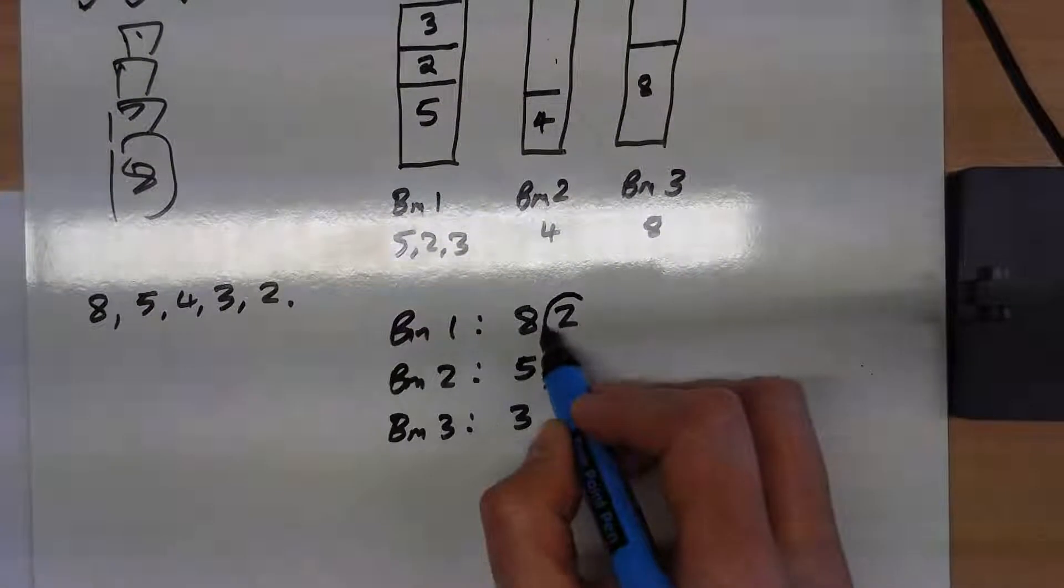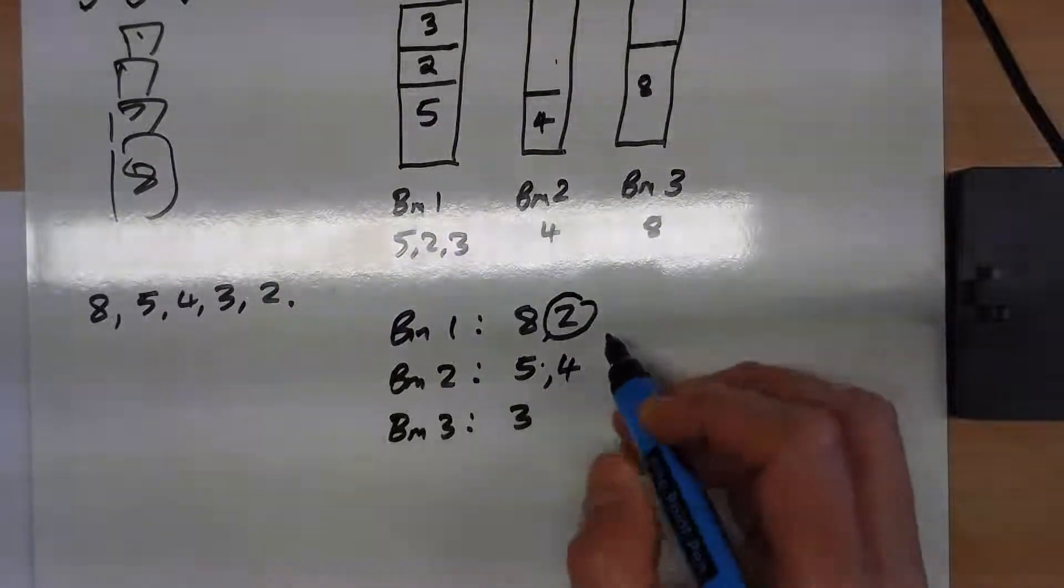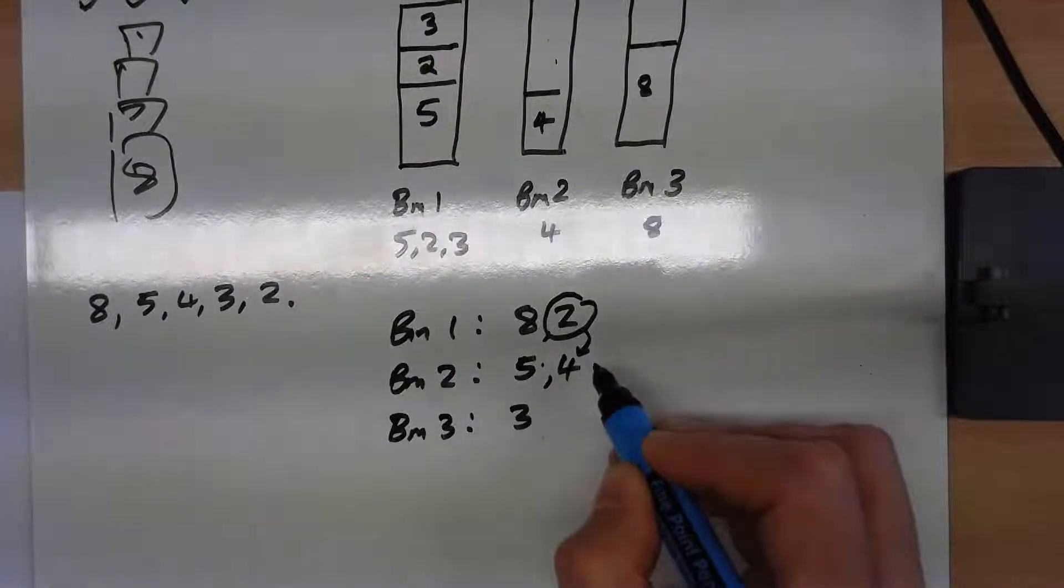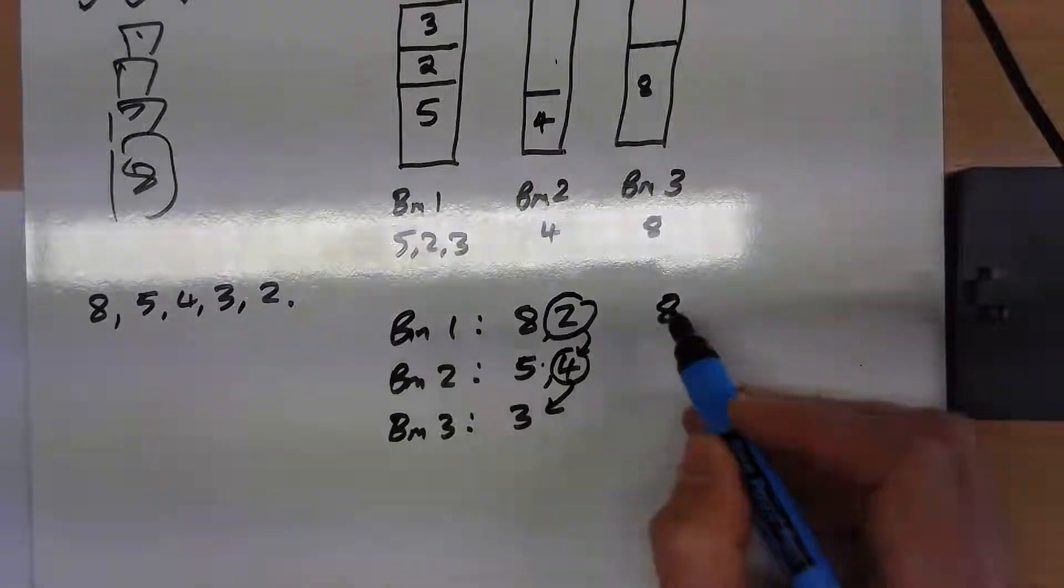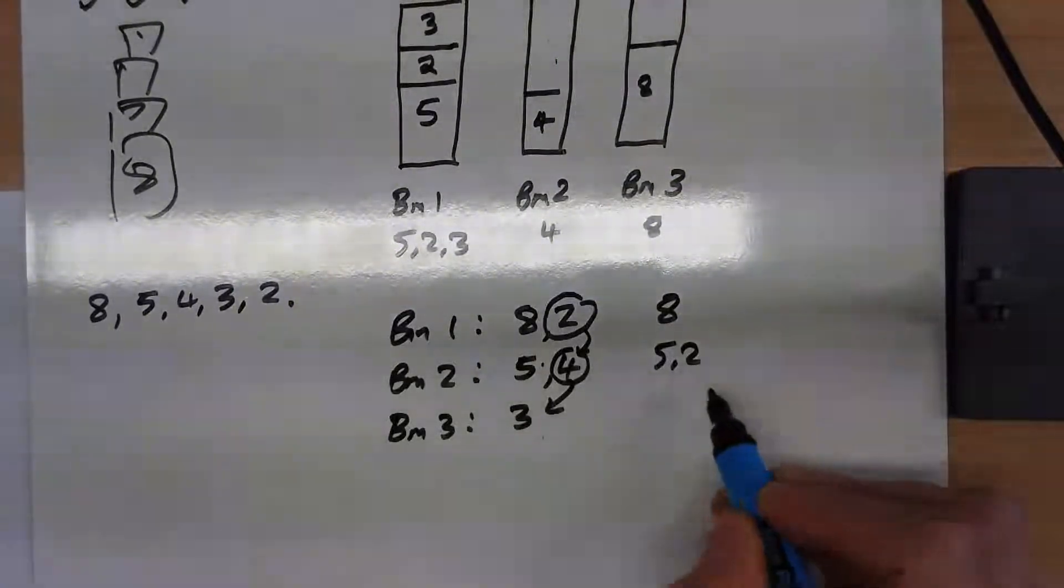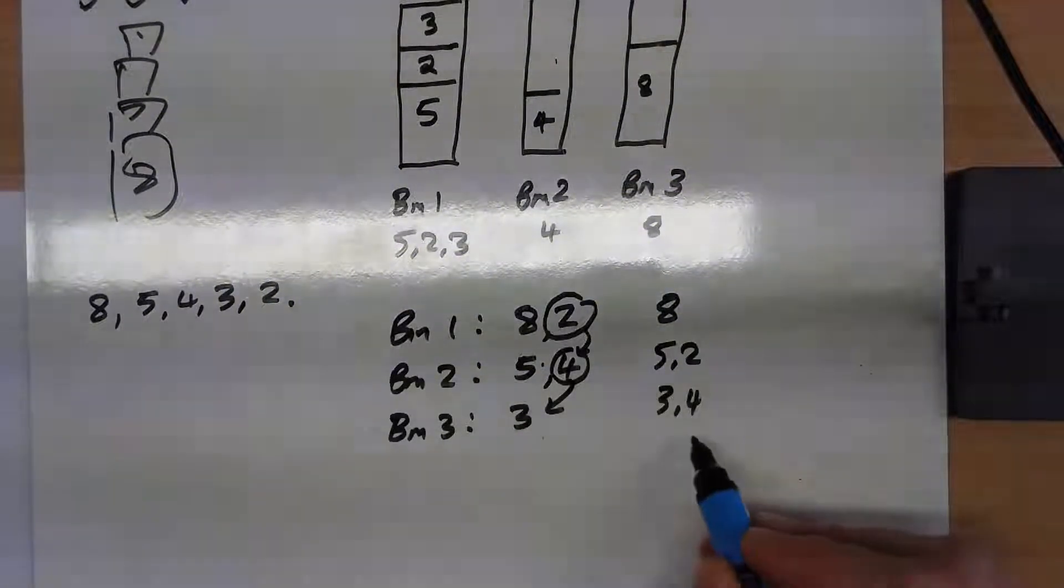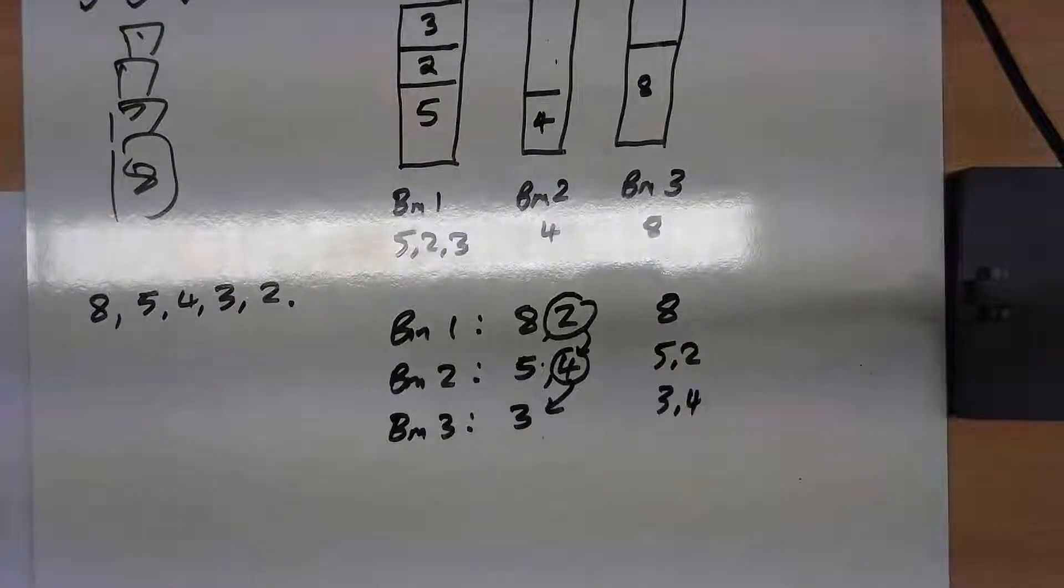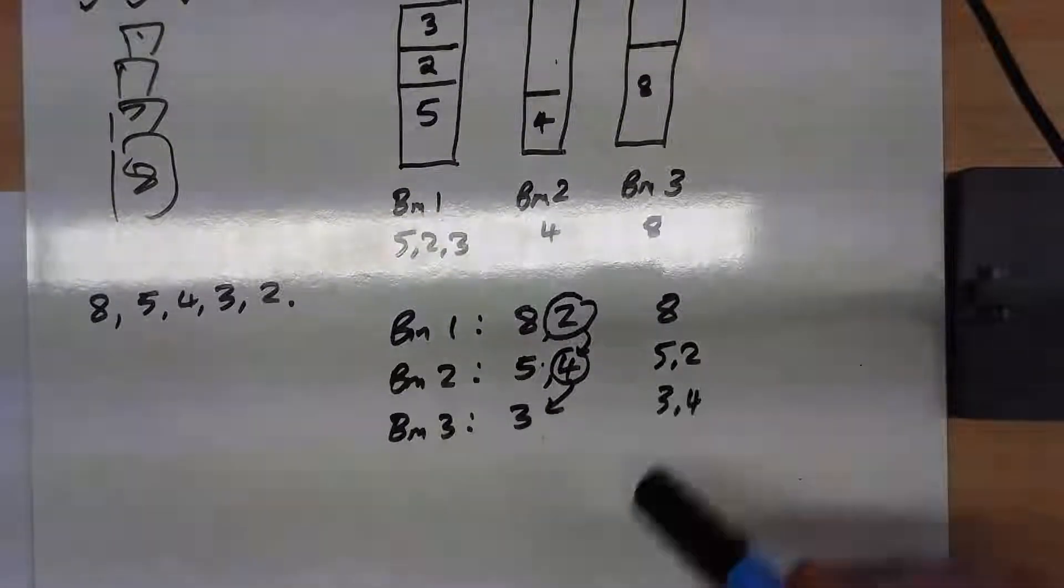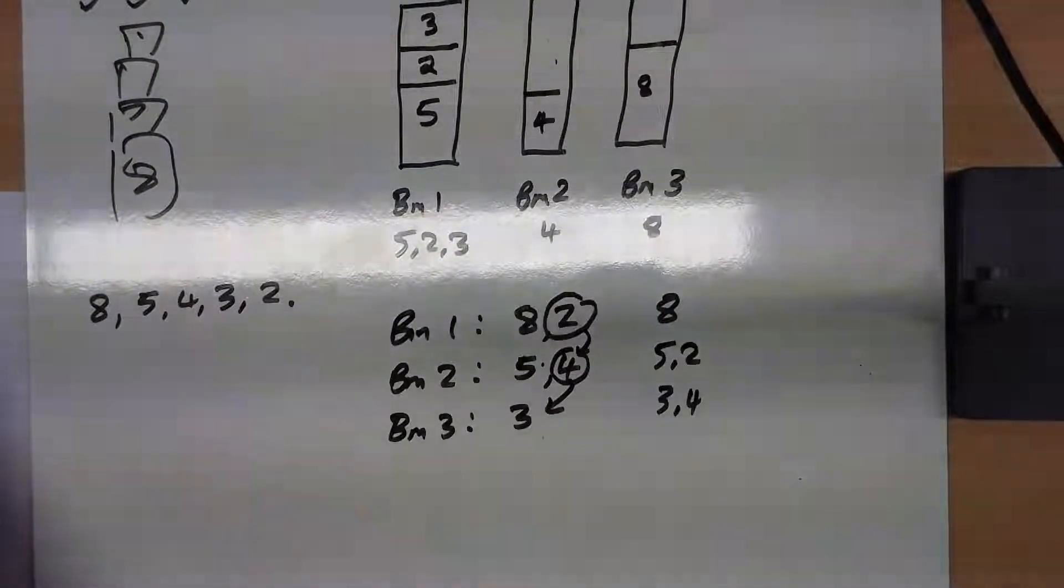Of course it is. You could have 8 in one bin, 5 and 2 in another, and 3 and 4 in the third. That's an example of how it would definitely be possible. You know it wouldn't fit in two bins because the grand total is more than 16.